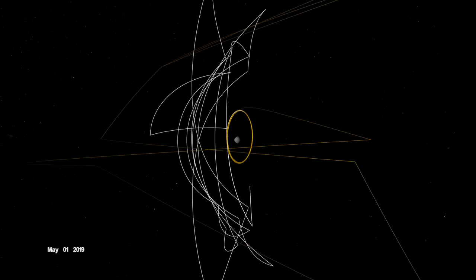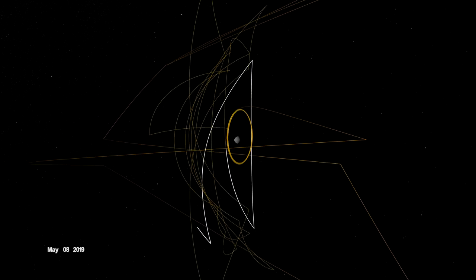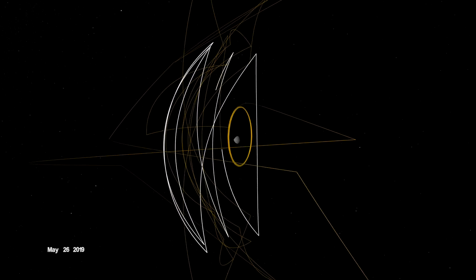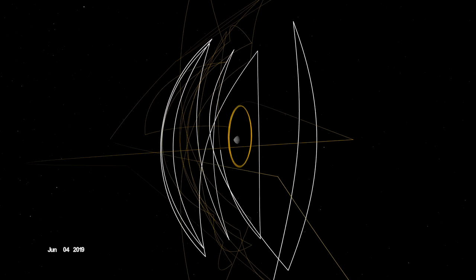During the detailed survey, OSIRIS-REx globally mapped Bennu at only 5 centimeters per pixel, the highest resolution of any planetary body, including Earth.